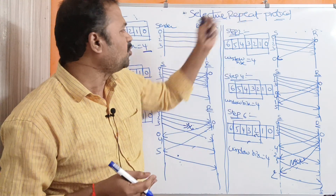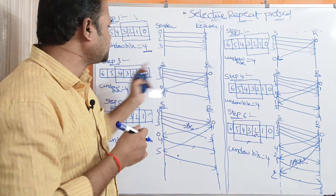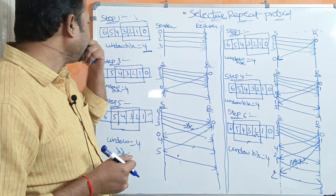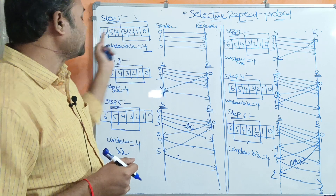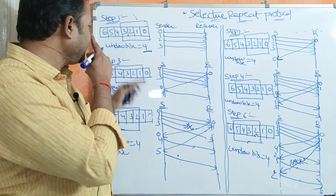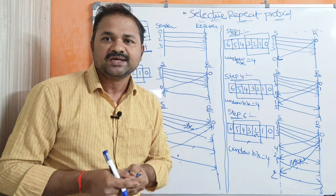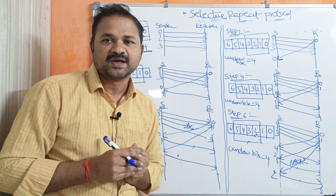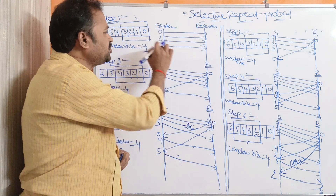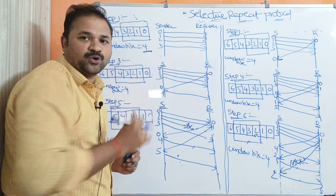Let us discuss Selective Repeat Protocol with the help of these steps. In Step 1, the sender wants to send 7 frames to the receiver, from frame 0 to frame 6. Let us assume the window size of the sender is 4, so the receiver window size is also 4. First, the sender sends 4 frames to the receiver, from frame 0 to frame 3. So frames 0 to 3 represent the current window.